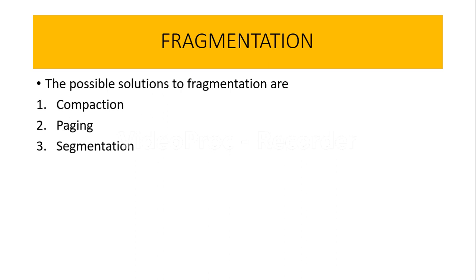Compaction is basically a technique where we combine all the free spaces together into one large block. Second is paging — paging is a concept that allocates memory in equal-sized blocks, and these equal-sized blocks are known as pages, which can be in non-contiguous forms. Third comes segmentation, which is a memory management scheme that supports the user's view of memory. These three concepts can be the possible solutions for the problem of fragmentation.